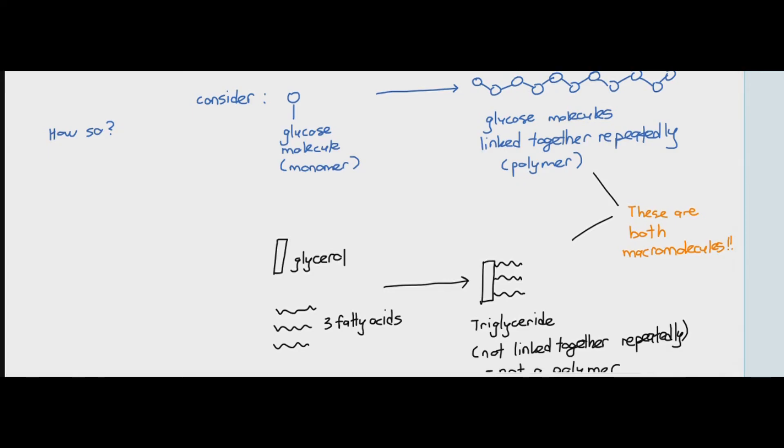However, we can consider glucose and triglycerides as macromolecules because both of them are larger molecules than their subunit. So long story short over here, starch is a polymer, which is also a macromolecule. Triglyceride is a macromolecule, but it's not a polymer because it's not made up of many repeating units linked together repeatedly.